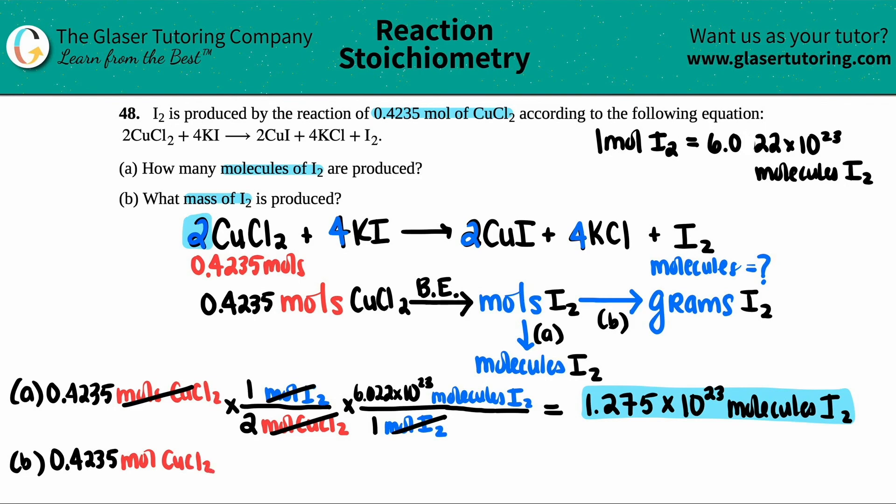So the first conversion is exactly the same, because I still have to go to moles of I₂. So I'm still going to multiply by the ratio. This was the same conversion, mole of CuCl₂ on the bottom. And then we have mole of I₂ on the top. And the numbers were 1 and 2. This canceled.